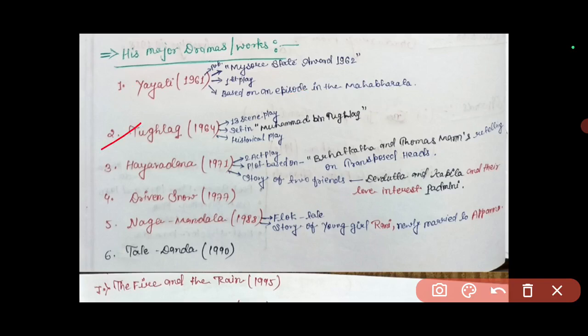His next work is Tughlaq from 1964, which is a historical play with 13 scenes set on Muhammad bin Tughlaq. Then Hayavadana came in 1971, which is a two-act play based on Thomas Mann and a transposed story from Bharat Katha. In this play there are two boys, Devadatta and Kapila, and the story is based on them.